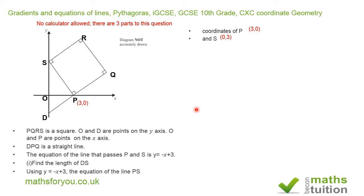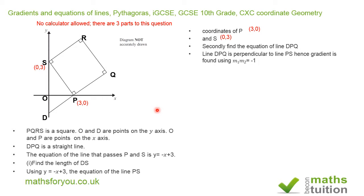To find the coordinates of point D, we need to find the equation of the line DPQ. Because SP is perpendicular to DPQ, the product of their gradients equals -1. So if M₁ is the gradient of SP and M₂ is the gradient of DPQ, then M₁ × M₂ = -1.